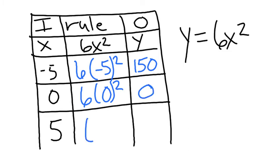Next, we're going to put 5 in. Well, 5 times 5 is 25. And 25 times 6 is 150. Now, you've completed this input-output table.